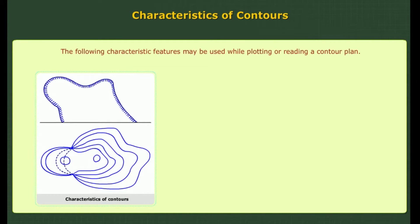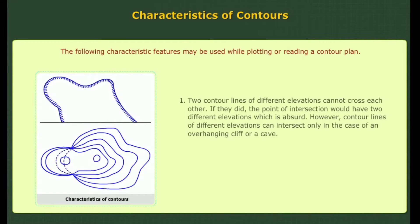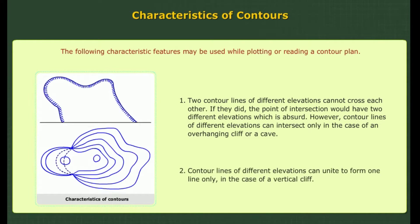Characteristics of contours. The following characteristic features may be used while plotting or reading a contour plan. 1. Two contour lines of different elevations cannot cross each other. If they did, the point of intersection would have two different elevations, which is absurd. However, contour lines of different elevations can intersect only in the case of an overhanging cliff or a cave. 2. Contour lines of different elevations can unite to form one line only in the case of a vertical cliff.